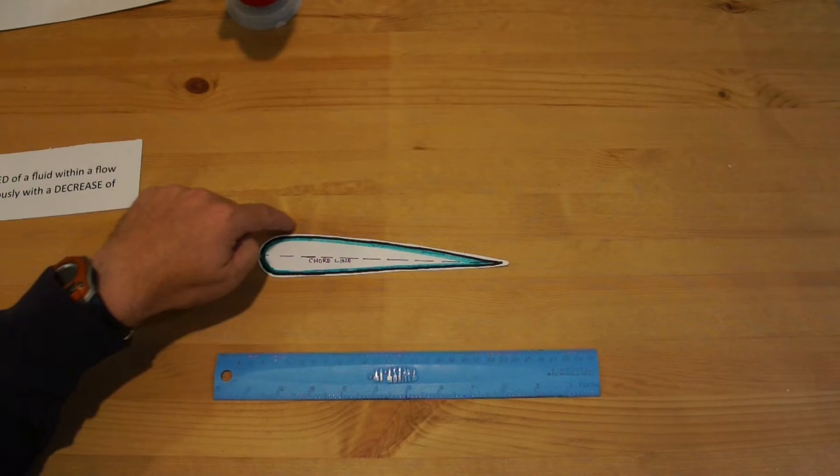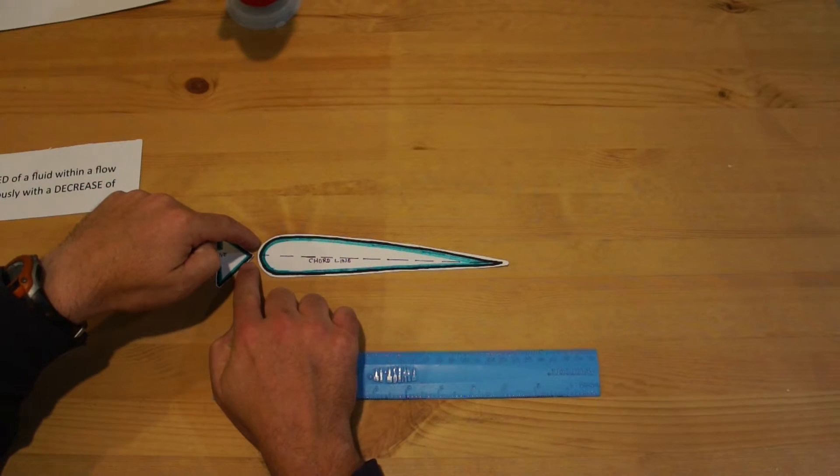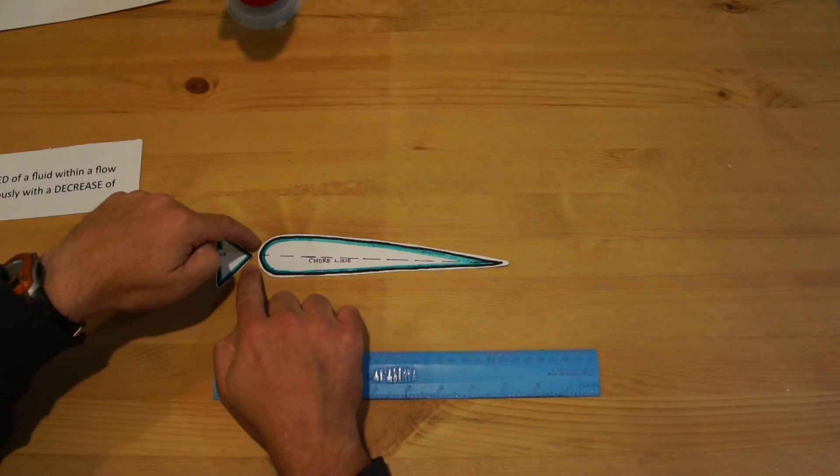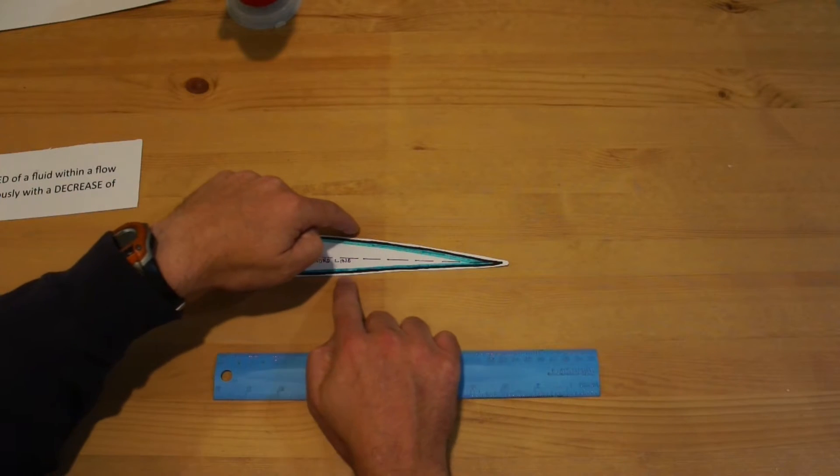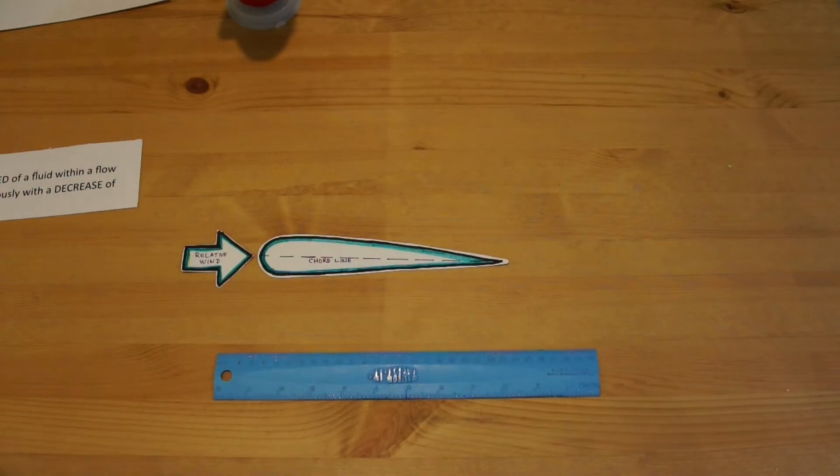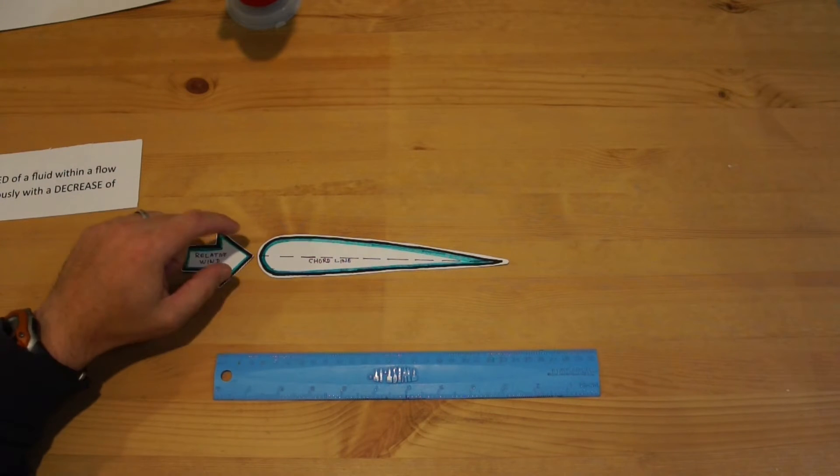You can debate that all day if you want. I'm just saying that that happens. Let's just follow two air molecules across the surface of the wing. The one over the top goes faster than the one on the bottom.